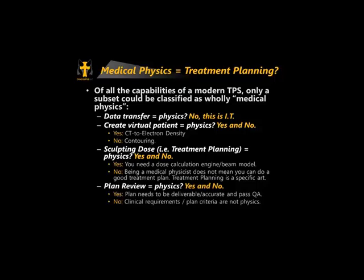And plan review — is that physics? Primarily no, but yes in part because the plan needs to be deliverable and accurate. Accurate means: is the algorithm properly commissioned, is the beam model optimized, can your machine deliver this accurately? But other than that, plan review is really about whether it meets clinical requirements and DVH-based goals. Those types of plan criteria are not physics. Treatment planning is not synonymous with medical physics.